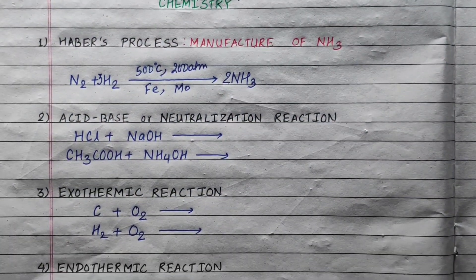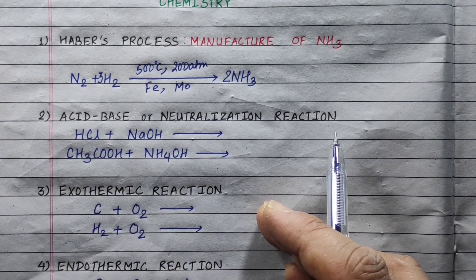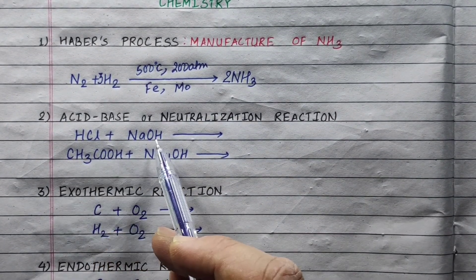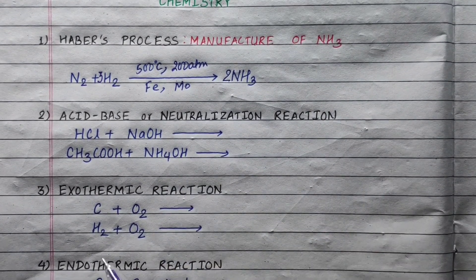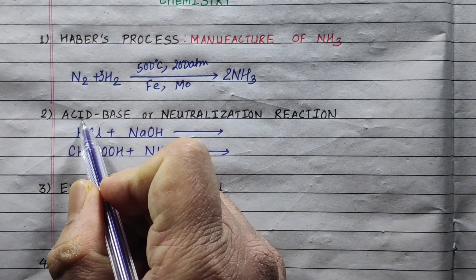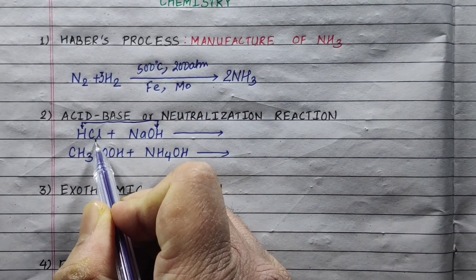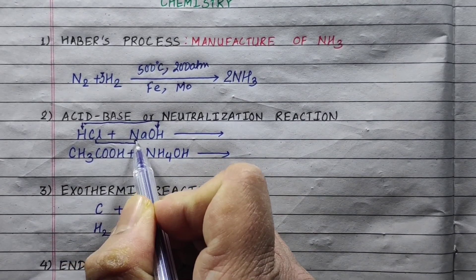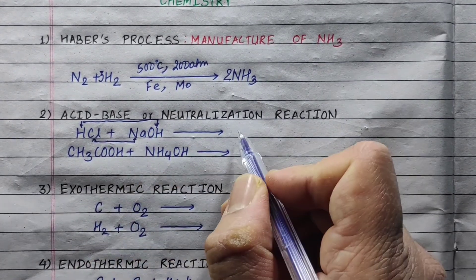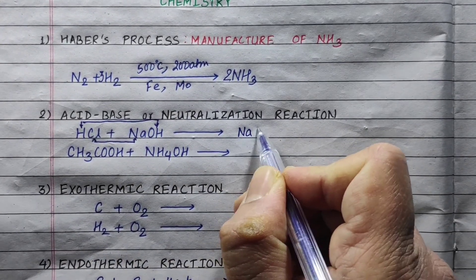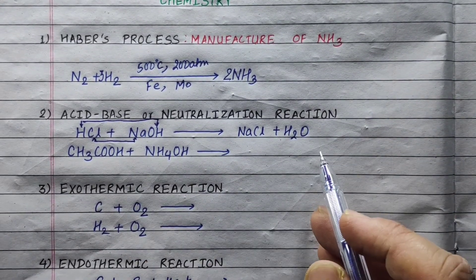Now, another reaction: the acid-base or neutralization reaction. In this reaction, acid and base of equal strength react. The reaction produces salt and water from acid and base. For example, acid and base give sodium chloride or water, H₂O. Your balanced reaction is ready.